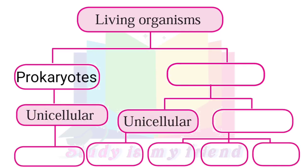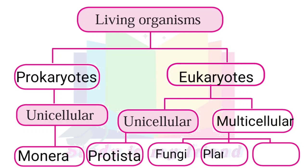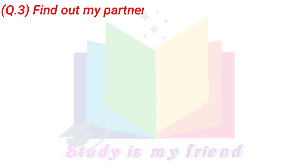Answer: Prokaryotes — Monera. Eukaryotes — divided into Multicellular and Unicellular. Under Unicellular: Protista. Under Multicellular: Fungi, Plantae, and Animalia.